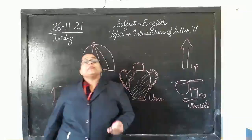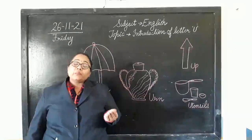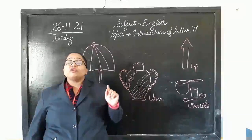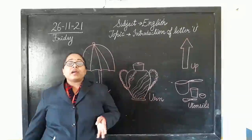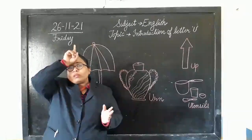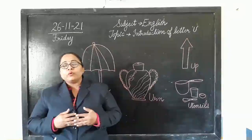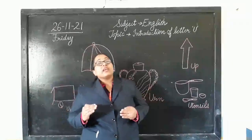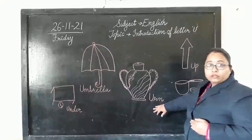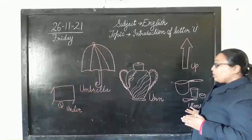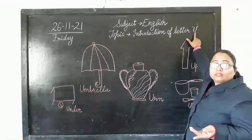Letter U — the sound is 'u,' but sometimes when reading this letter it begins with 'yoo' sound, like utensils and unicorn. A unicorn is a creature that looks like a horse but has a beautiful horn on its forehead. They are very beautiful and pretty. So U says 'u': under, umbrella, urn, up. And U also says 'yoo': utensils, unicorn.